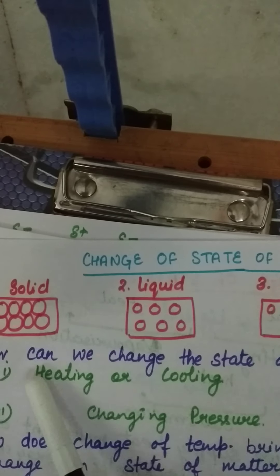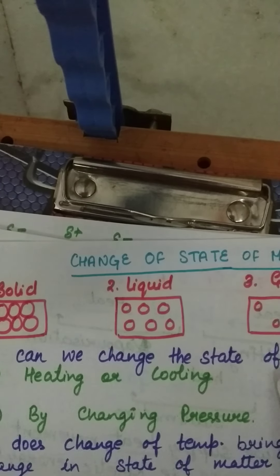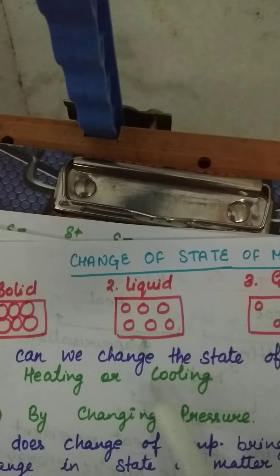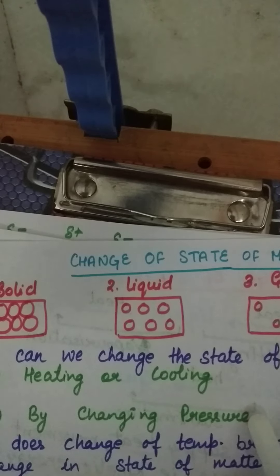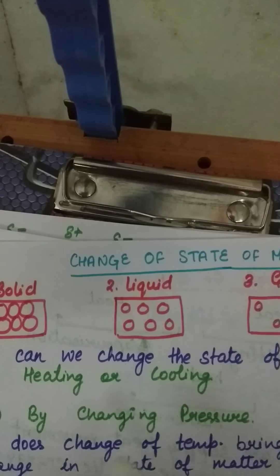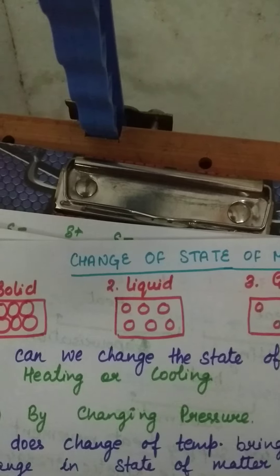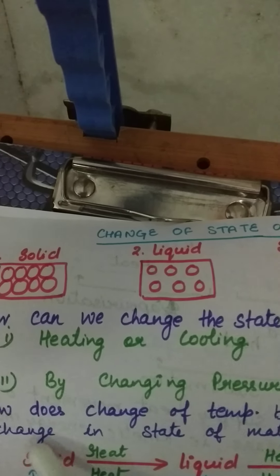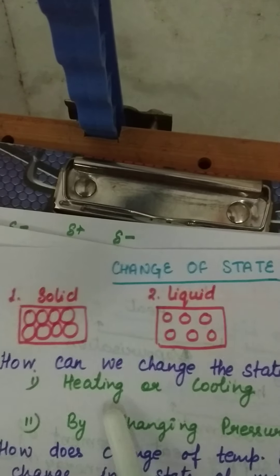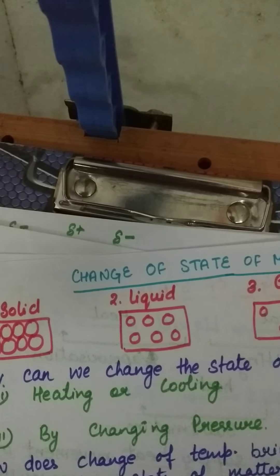Now the point is, how can we change the state of matter? Like if we have taken ice, it can change to water, and water can change to steam. There are two conditions: one is by heating or cooling, and second is by changing the pressure.